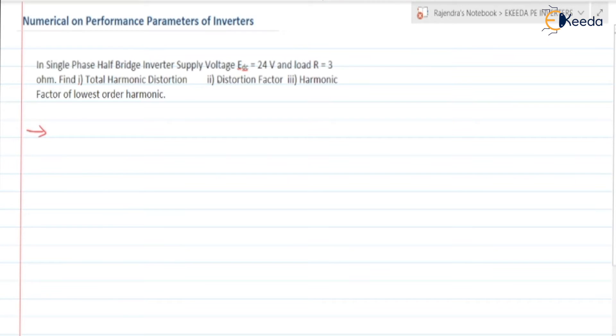The single phase half-bridge inverter supply voltage is 24 volts. We are having the half-bridge inverter with EDC equal to 24 volts. Load R is equal to 3 ohm. Our task is to find the THD, distortion factor, and the harmonic factor.